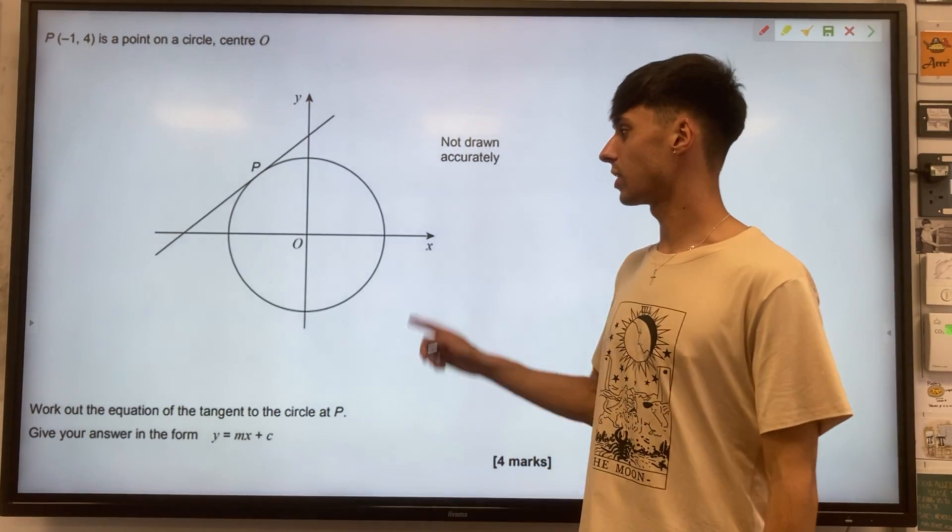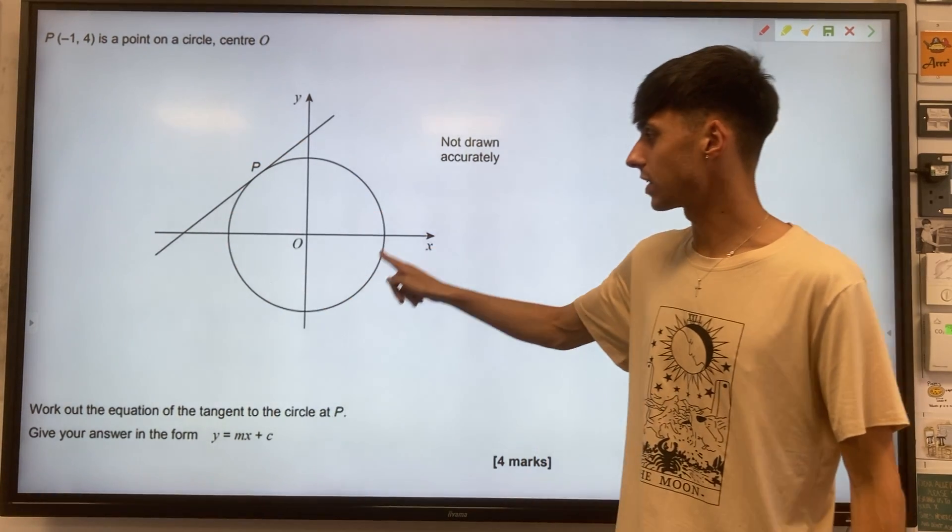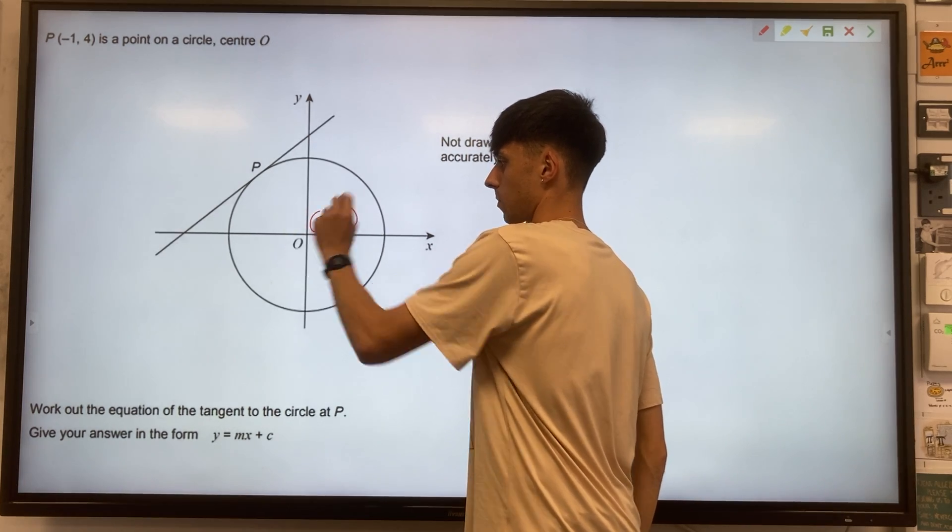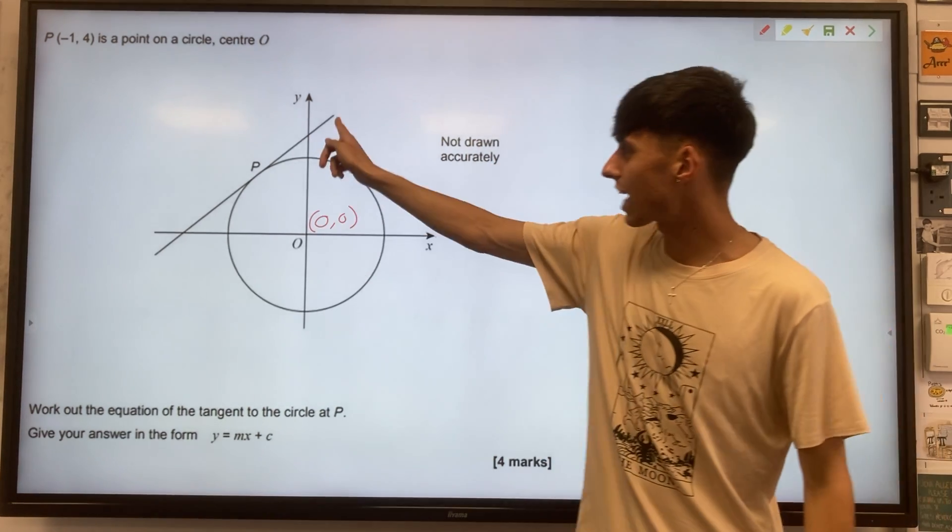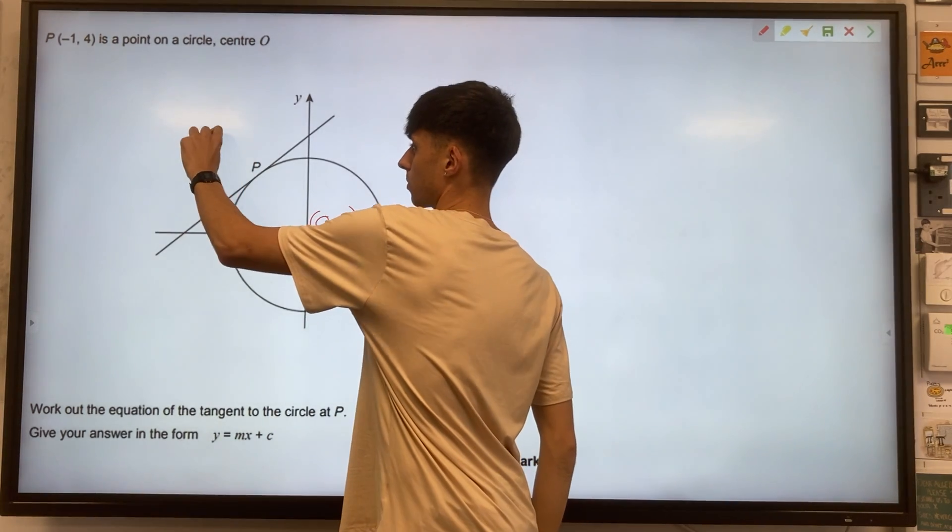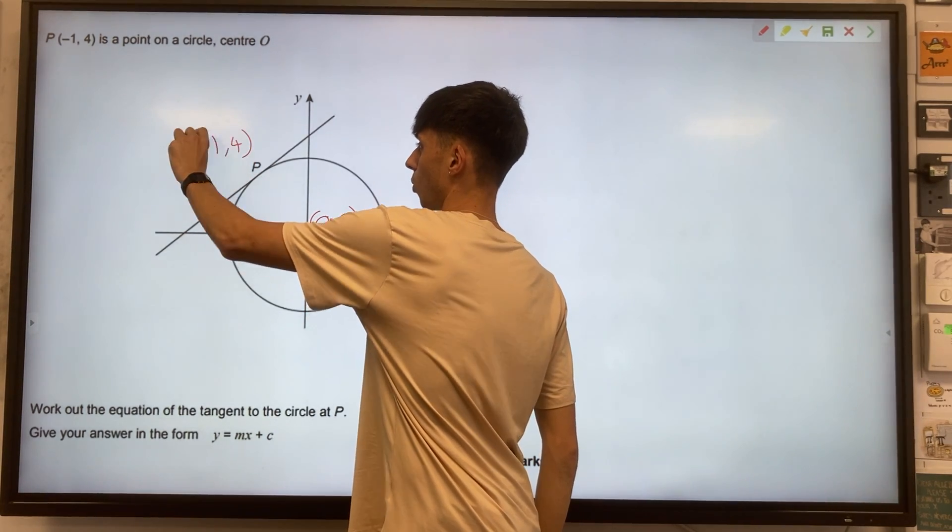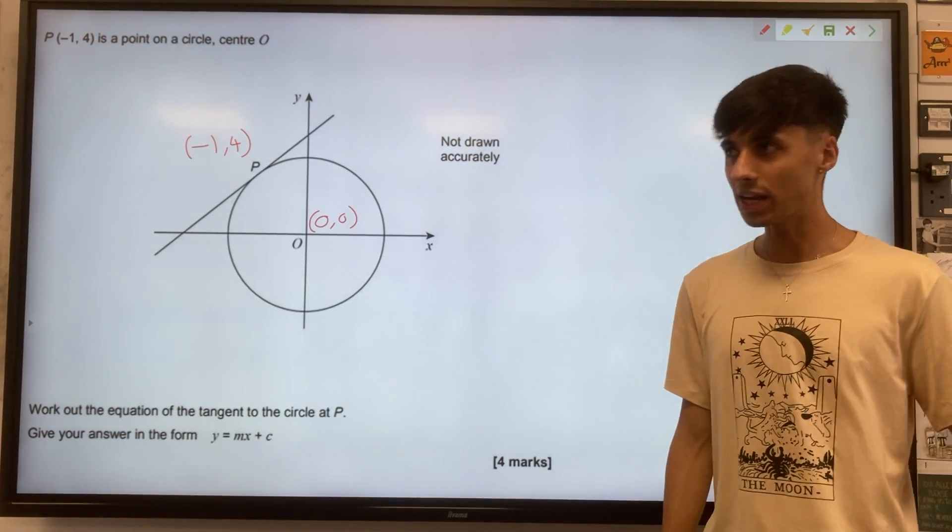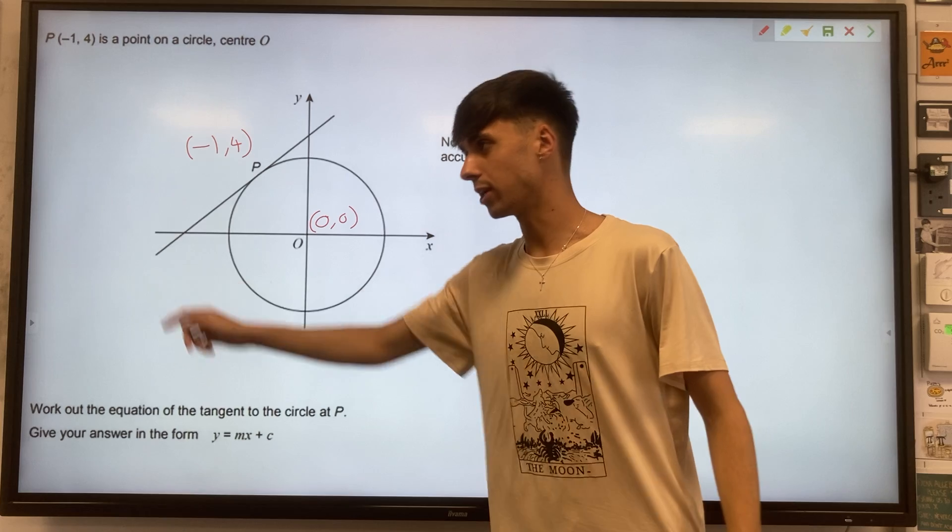In this question, we get given a circle with its centre at the origin, so I'll mark in here 0, 0. And we have a tangent line to this circle, and the tangent meets the circle at minus 1, 4. We want to use this to find the equation of this tangent line.